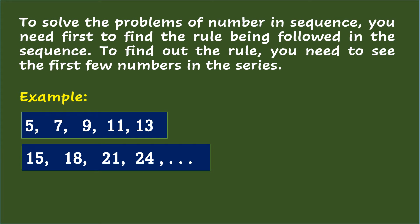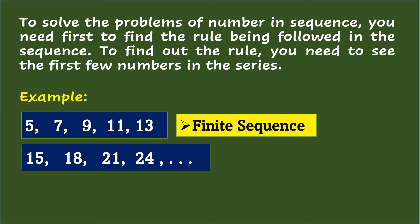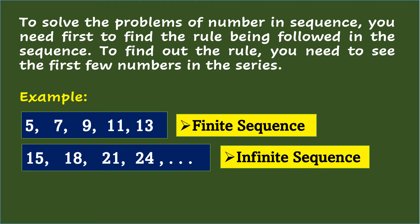To solve for a number in a sequence, you need first to find the rule being followed. To find out the rule, you need to see the first few numbers in the series. For example, 5, 7, 9, 11, 13, which we call a finite sequence — a sequence with a starting point and a stopping point. On the other hand, 15, 18, 21, 24, and so on is known as an infinite sequence, meaning the sequence goes on, indicated by the three dots at the end.